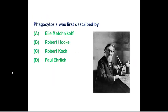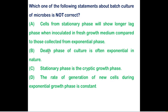Phagocytosis was first described by Metchnikoff, who was the first person to describe the phagocytosis process. You might be confused between option E and option D, but option E is correct. Both Metchnikoff and Paul Ehrlich received a Nobel Prize for their work in immunity — Ehrlich was working on humoral therapy — but the question asks who described phagocytosis, and that was first described by Metchnikoff.